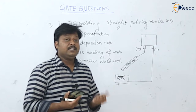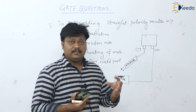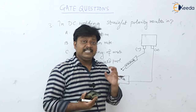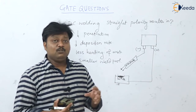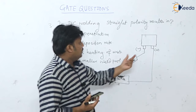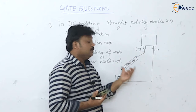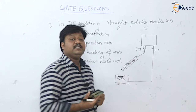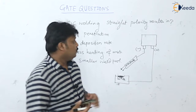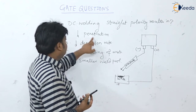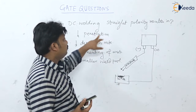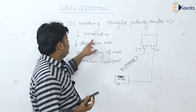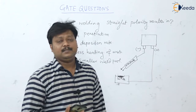In MIG welding, for example, the wire electrode is kept positive intentionally so that the wire melts easily and we get maximum deposition rate from the wire onto the workpiece. In straight polarity, we get maximum penetration and a bigger weld pool, but the deposition rate is lesser. So the correct option is lower deposition rate.